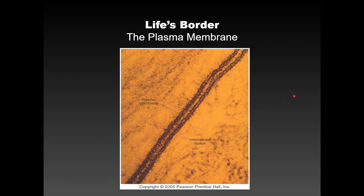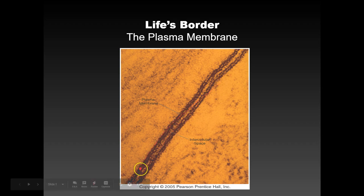This is chapter 5 in the text. It's talking about the border around every cell, which is the plasma membrane. We talked about this last week when we were talking about plasma membranes being composed of lipids of various kinds with proteins spanning that plasma membrane layer as well. Here is an electron microscopy photograph of a plasma membrane in the intercellular space.